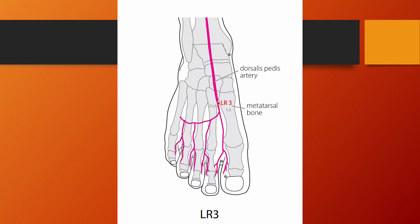Liver 3, Taichong or great surge, is located on the dorsum of the foot in the depression proximal to the first metatarsal space. Liver 3 is the yuan-source point and shu-stream point of the liver meridian. Functions: regulates liver qi, subdues liver yang, calms the shen, nourishes liver yin. Liver 3 is a very important and commonly used point; it is often coupled with LI4, known as the four gates, to effectively move qi and blood throughout the body. Shu-stream points alleviate heaviness and pain in the joints; on yin meridians, shu-stream points are identical in action to yuan-source points. Needling: perpendicular insertion, 0.5 to 0.8 tsun.